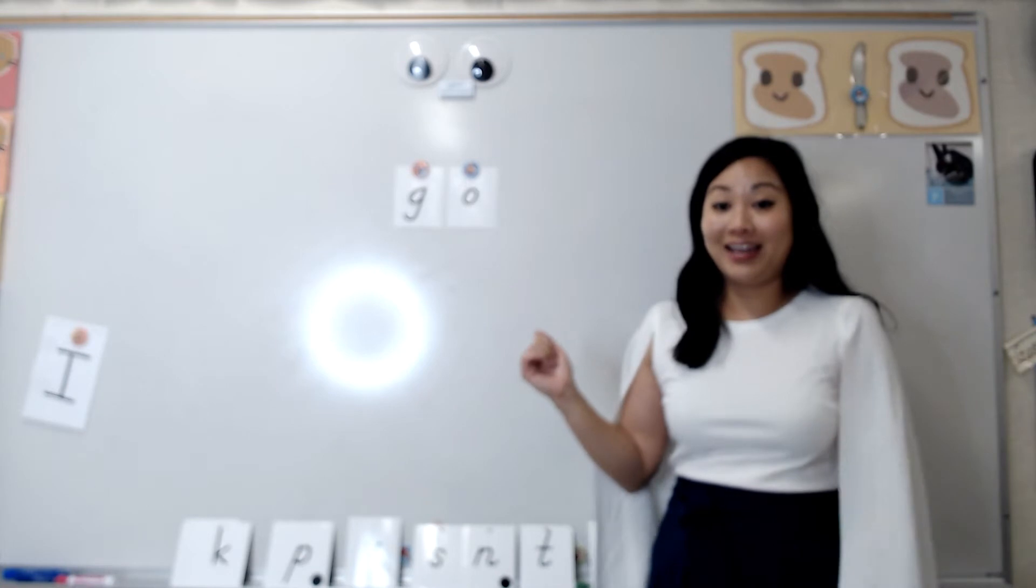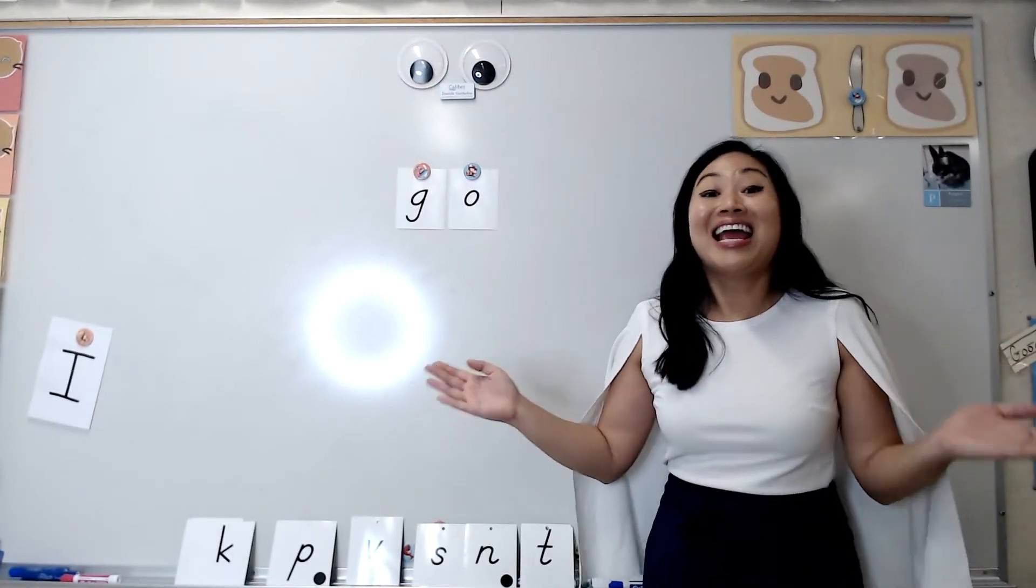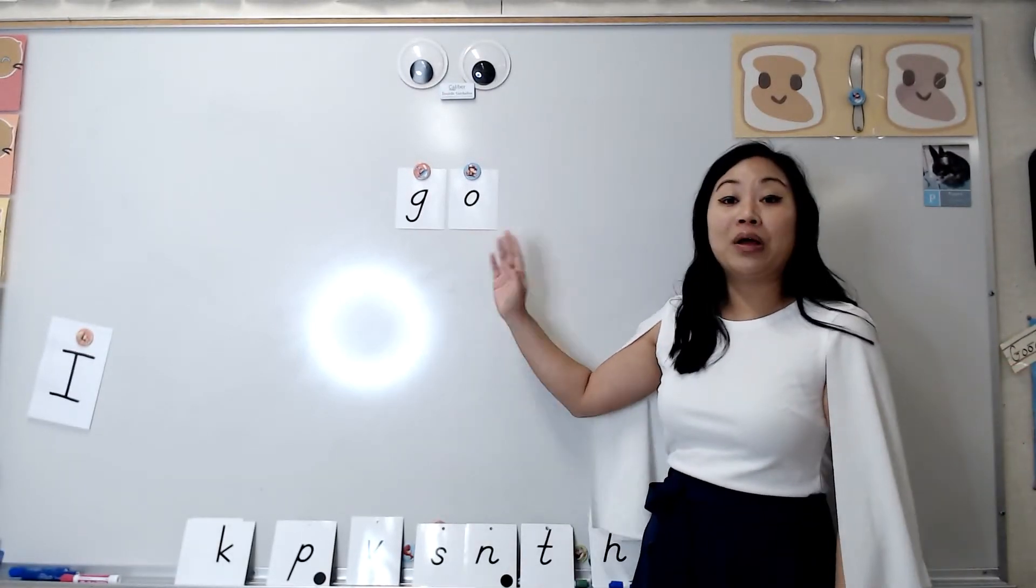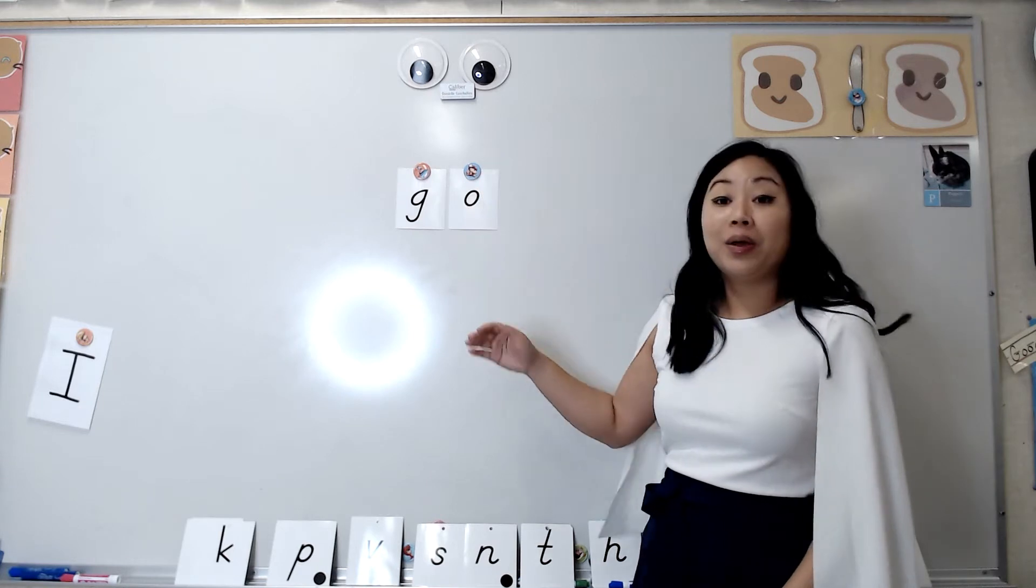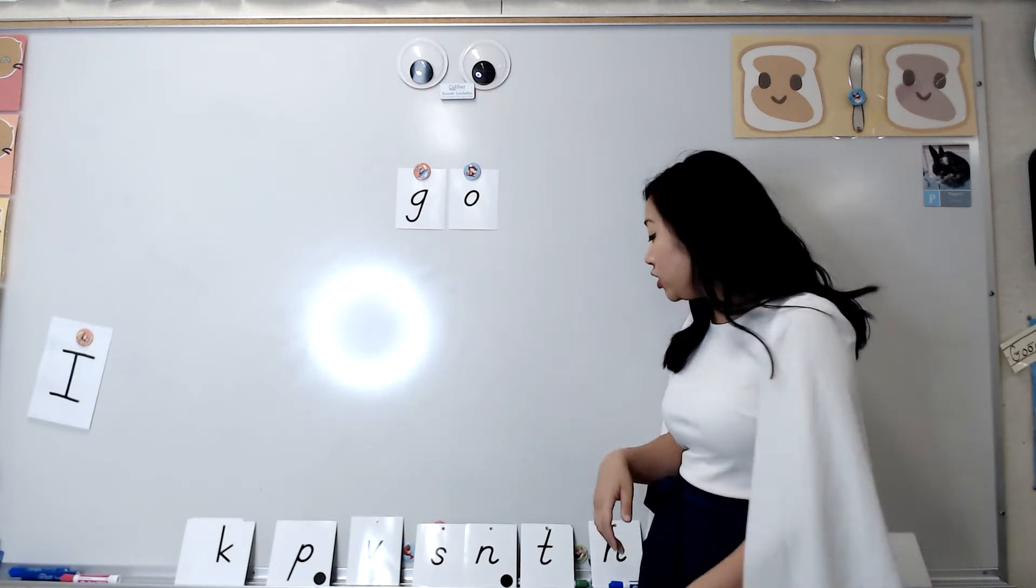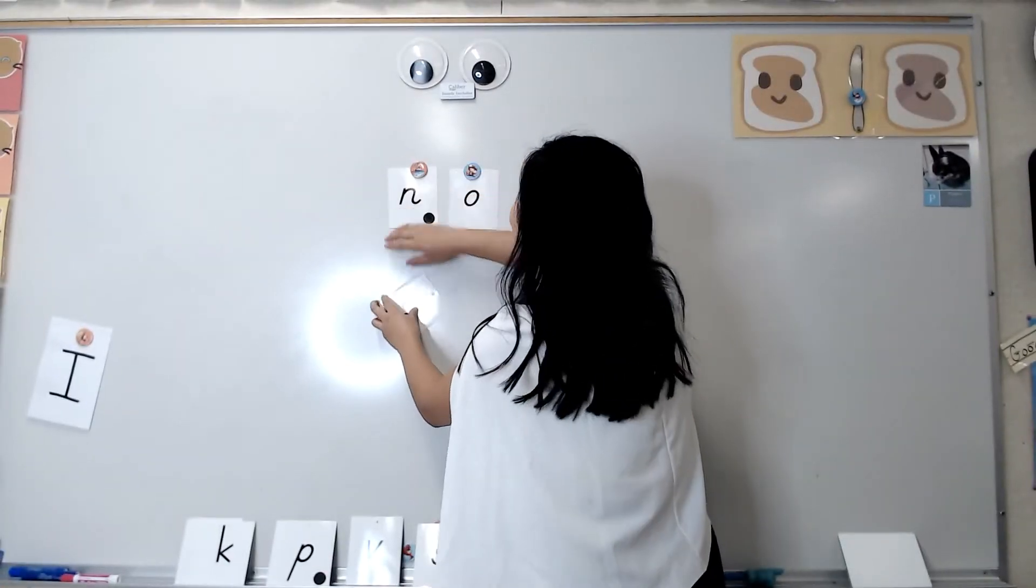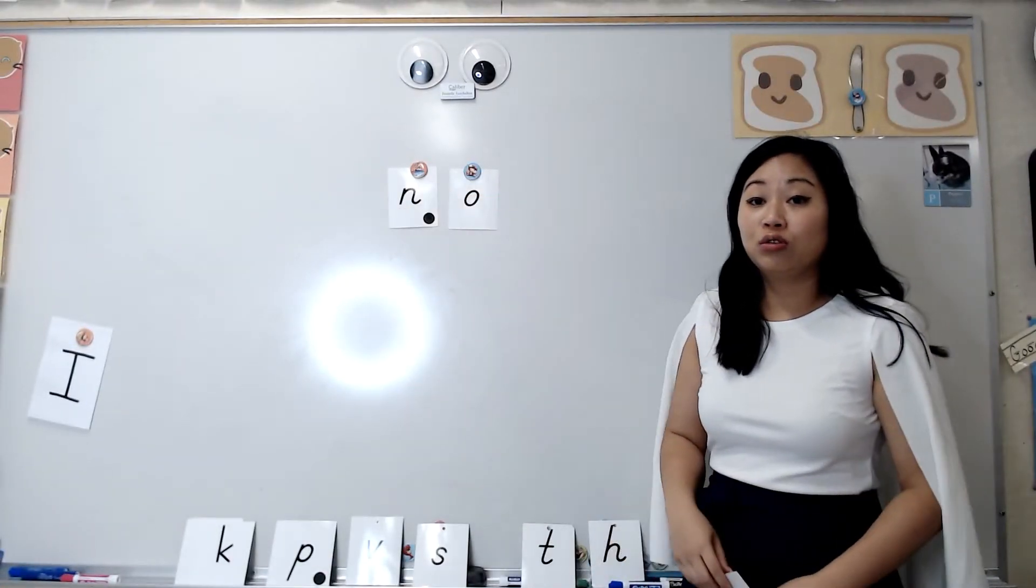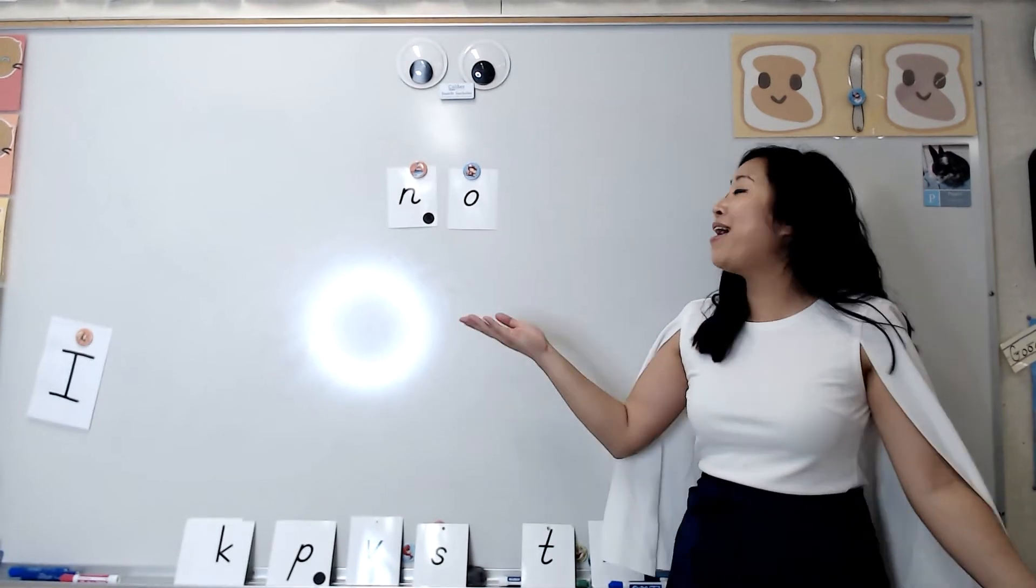What does this word say? You're right. This is our sight word go, G-O. That spells go. If I change the G to an N, does that spell go? No. Now it says no.